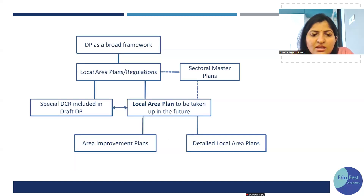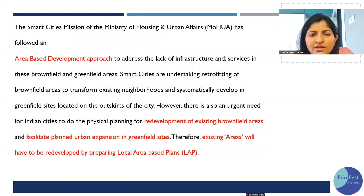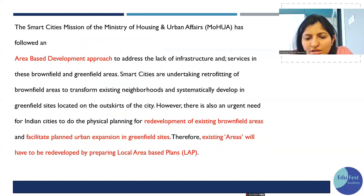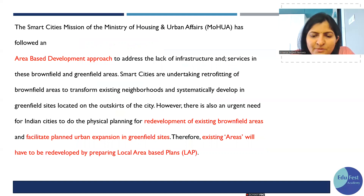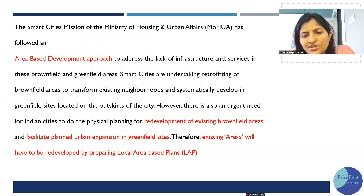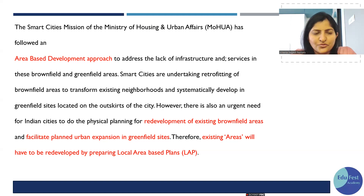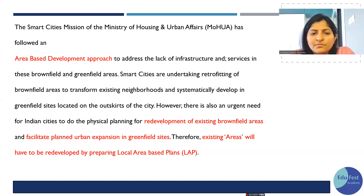According to AMRUT guidelines, there are two types: area-based development and Local Area Plans (LAP). The AMRUT guidelines on LAP will help clarify the concept. For example, there are two types of development: greenfield development and brownfield development. Brownfield development means the redevelopment of an existing brownfield area.